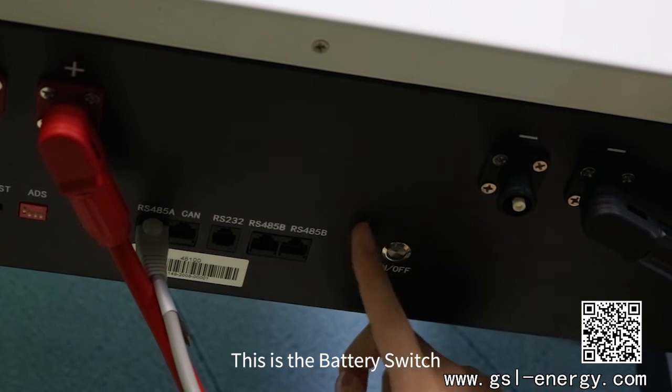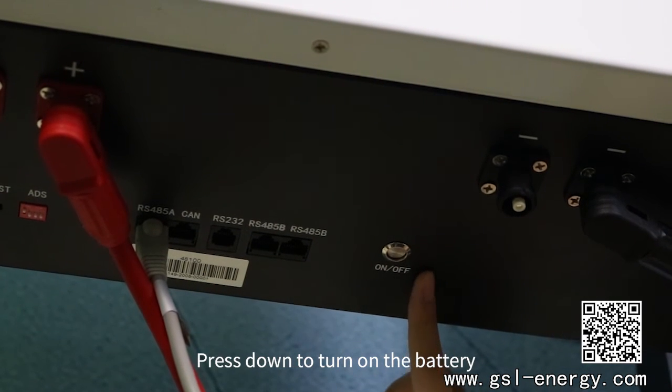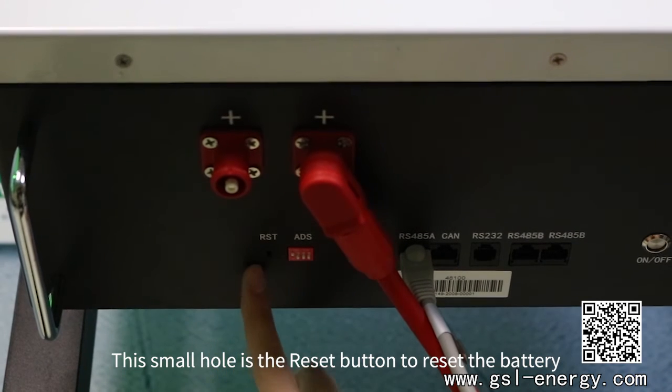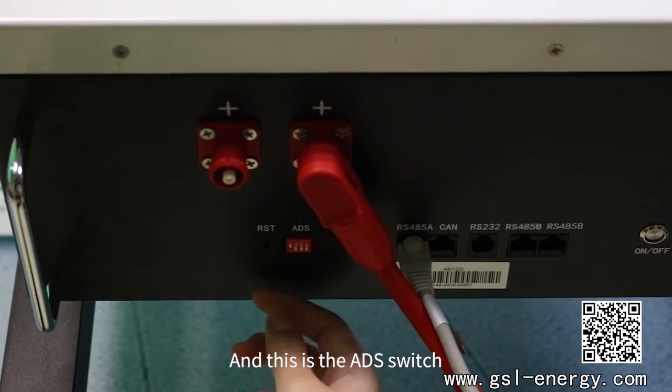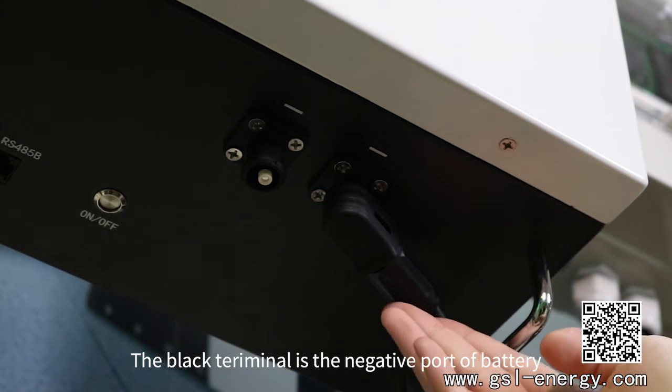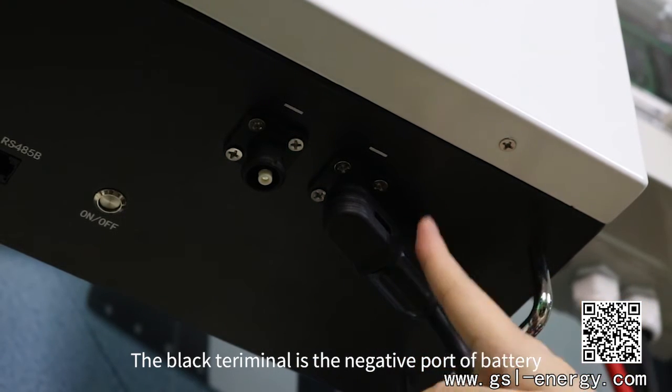This is the battery switch. Press down to turn on the battery. This small hole is the reset button to reset the battery. And this is the ADS switch. The black terminal is the negative port of battery.